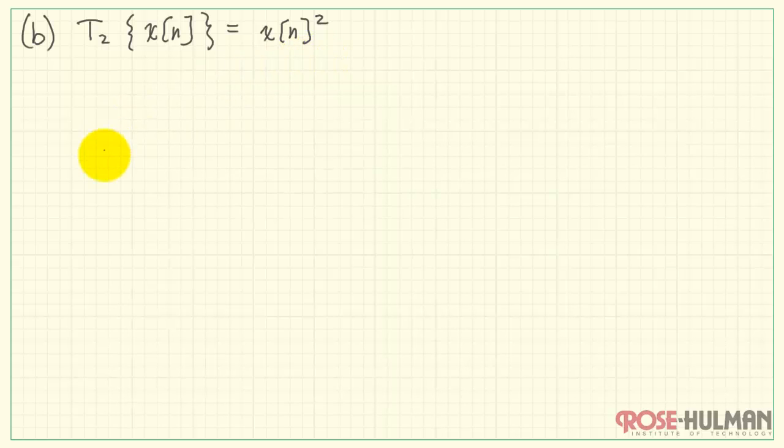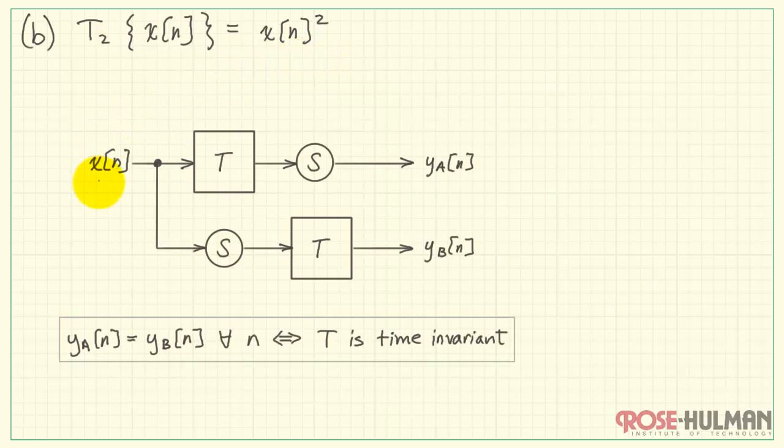All right, this is system T2, which is the square of the input sequence. We pass X of n through our system, leading to X of n squared, and then we pass that through our shift operation.